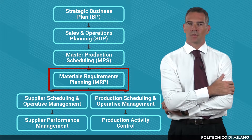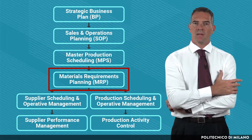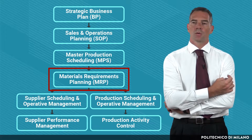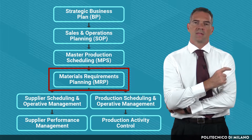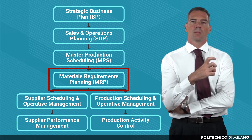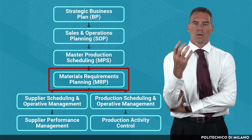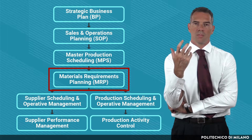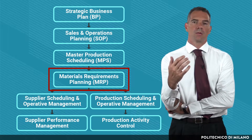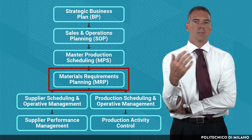This lecture is dedicated to the topic of Materials Requirement Planning, a very important procedure to elaborate the materials requirement and a very important step in the production planning cycle. Materials Requirement Planning connects the upper part of the planning cycle, linked to the master production schedule, with the lower part, linked to scheduling and operative management.